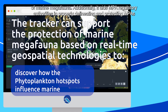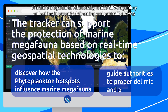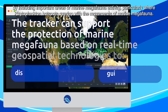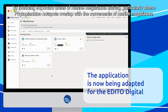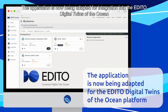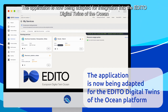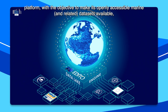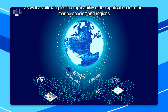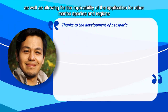Additionally, it aids MPA regulatory authorities in properly delineating and protecting MPAs by including important areas of marine megafauna activity, particularly where phytoplankton hotspots overlap with the movements of marine megafauna. The application is now being adapted for integration into the Edito digital twins of the ocean platform, with the objective to make its openly accessible marine datasets available, as well as allowing for the replicability of the application for other marine species and regions.